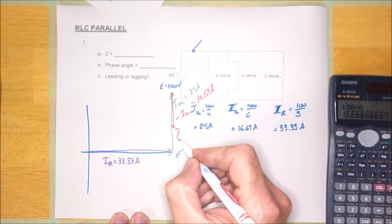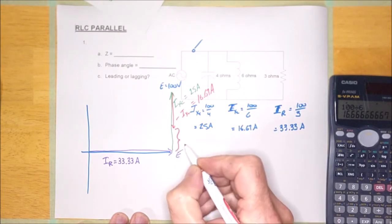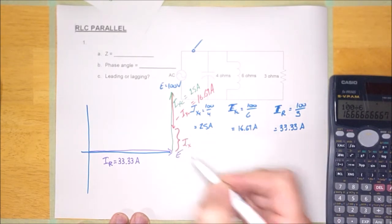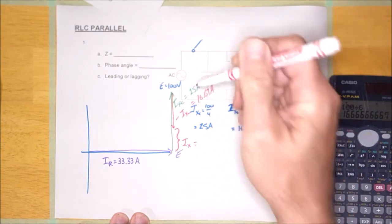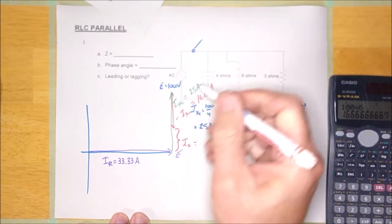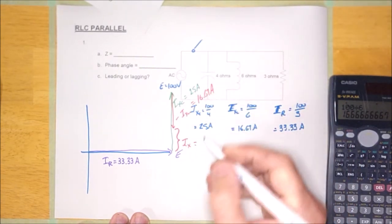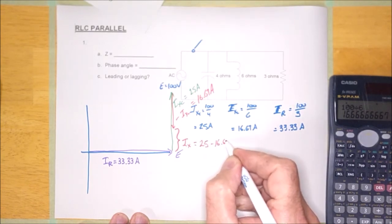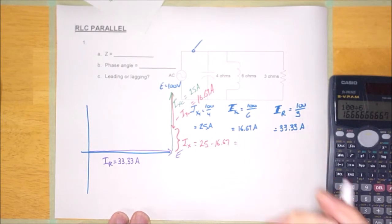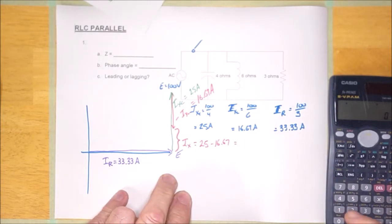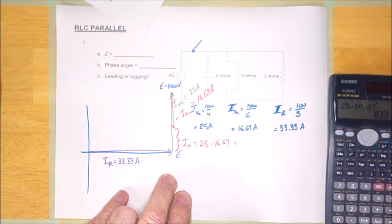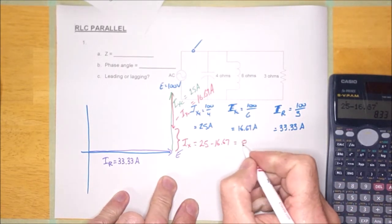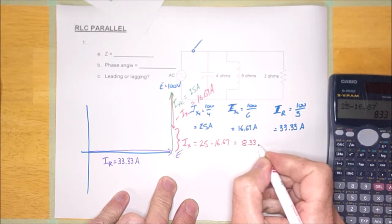And this little business right here, guys, that is going to be called IX. And IX is going to be the difference between these two. Just take the bigger one and subtract the smaller one. So it will be 25 minus 16.67. And so IX, 25 minus 16.67, it is 8.33 amps.